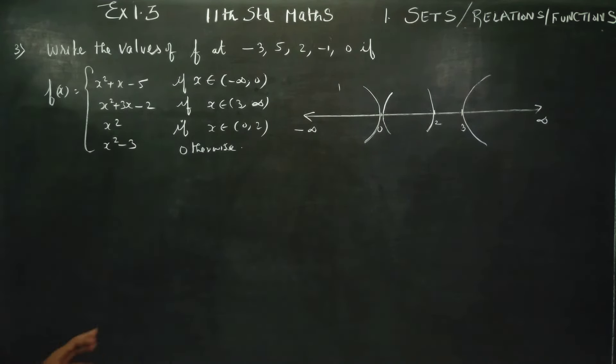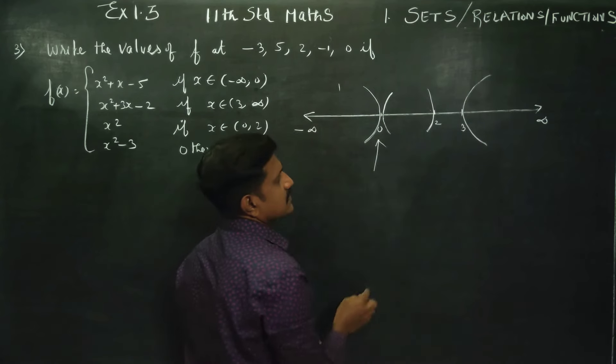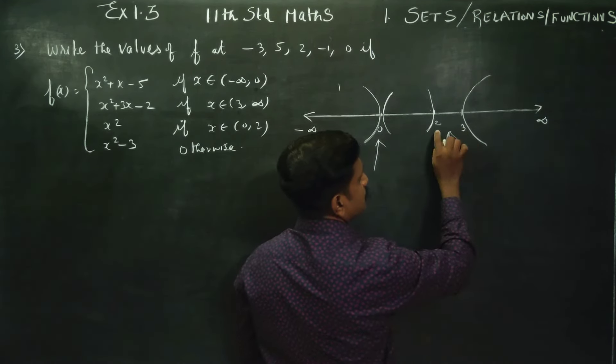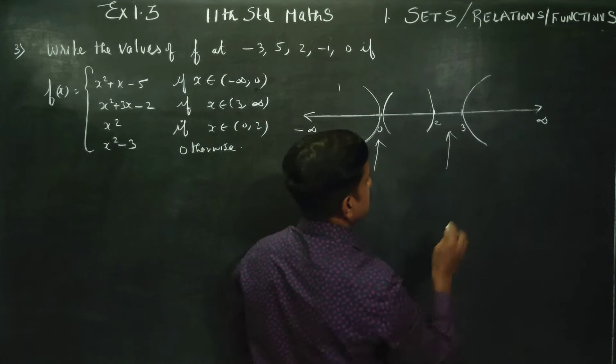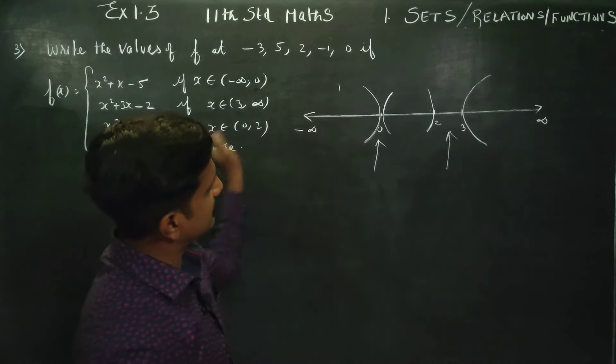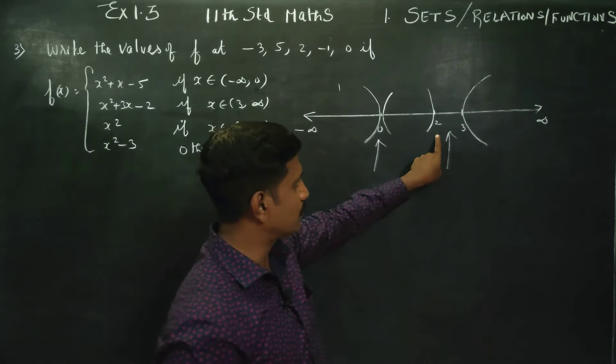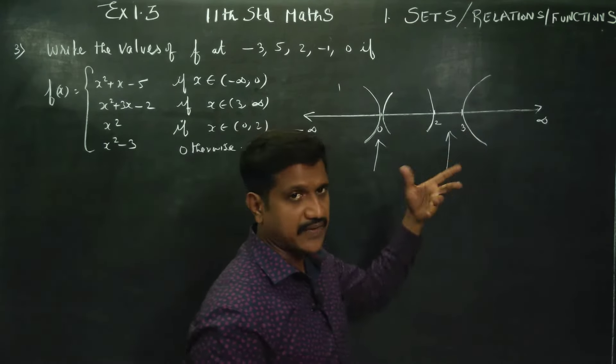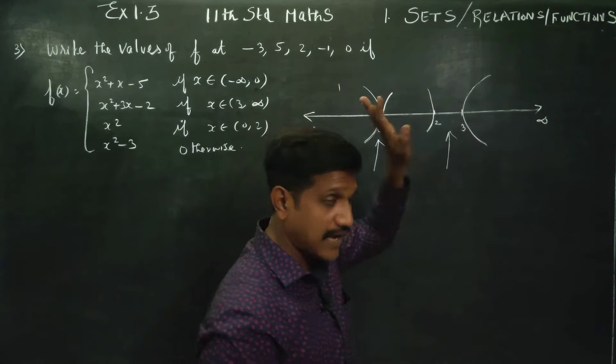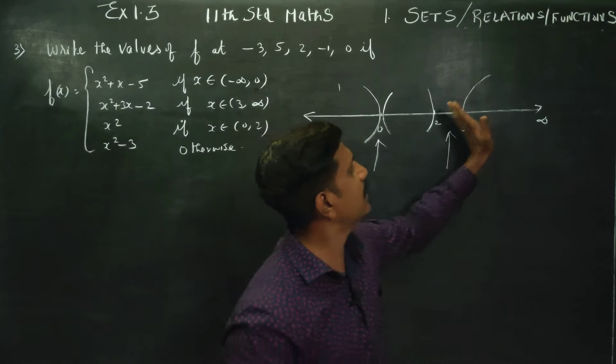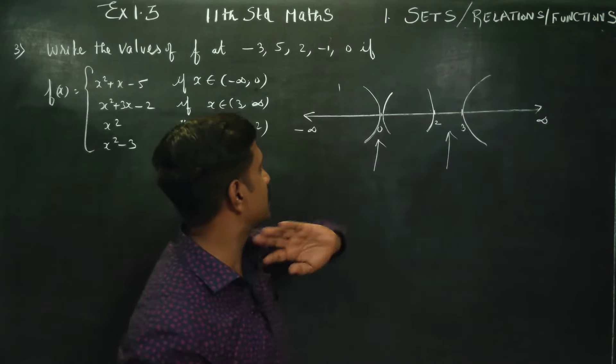x square minus 3 otherwise. Otherwise from 2 to 3. This is covered. 0 covered, otherwise. 2 covered, otherwise. 3 covered, otherwise. It is all otherwise, it is all covered.